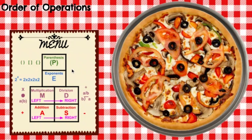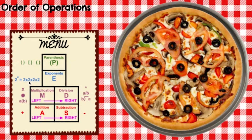After the parentheses, you have exponents. In fifth grade we really don't cover this much, but an exponent is this little number up at the top. All it's saying is: take this number and multiply it by itself that many times. So like, 2 to the 4th would be 2 times 2, which is 4; 4 times 2, which is 8; 8 times 2 is 16. So 2 to the 4th power is 16. That comes after parentheses.